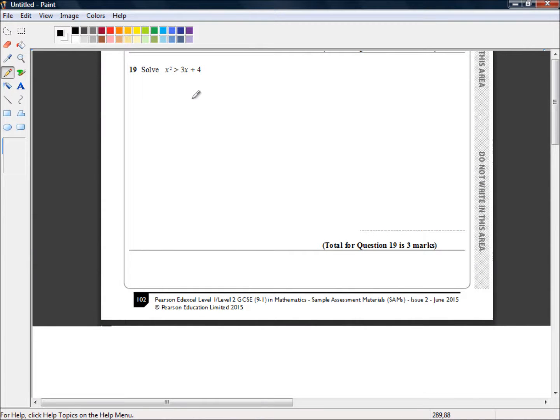Hello and welcome to the new style Edexcel GCSEs. These are the ones that go from grades 9 through to grades 1. This is paper 1MA1/1H. It's the first paper in the higher tier and it's a non-calculator paper. Now we're picking up here in question 19.